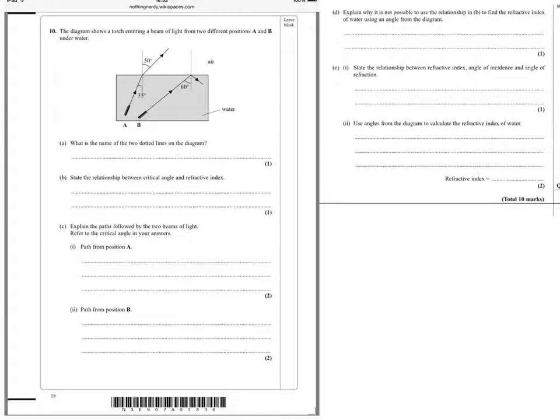So, question 10. The diagram shows a torch emitting a beam of light from two different positions, A and B, underwater. We see we've got A here, where our light is refracting out, and B here, where our light is reflecting off the surface and coming back in.